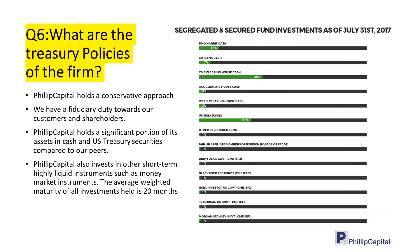Phillip's treasury policies: we hold a very conservative approach because we have a strong fiduciary duty towards our customers and shareholders. We hold a significant portion of money in cash to ensure liquidity, and in U.S. Treasury securities. We also invest in short-term funds and money market instruments, with an average maturity of about 20 months. We declare what we put in on our website, updated regularly — so you can check.